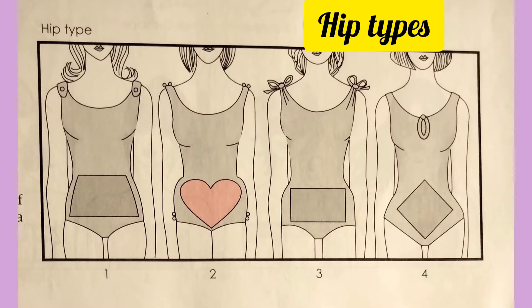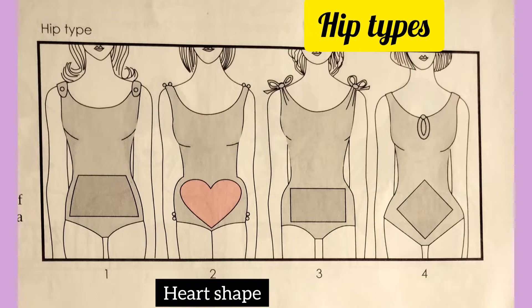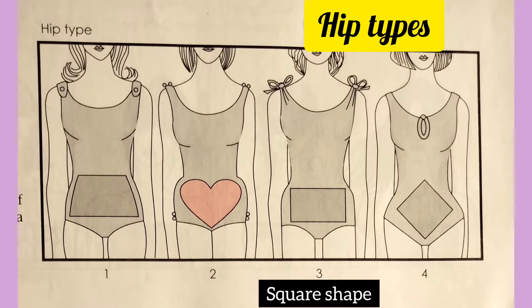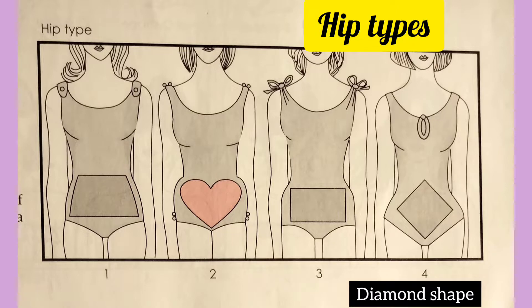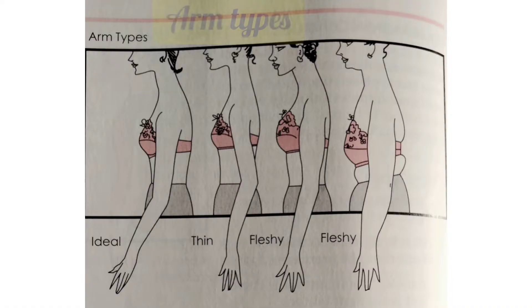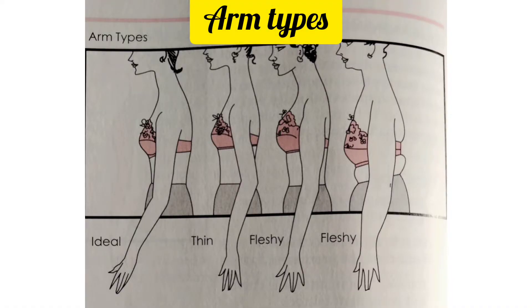The next figure variation is the hip. There are four hip types: the ideal hip, heart shape, square shape, and diamond shape.